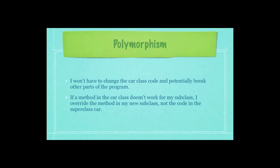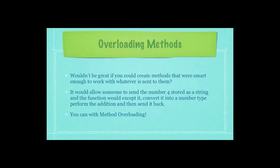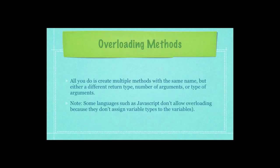If a method in the car class doesn't work for my subclass, I override the method in my new subclass, not the code in the superclass car. With method overloading, you create multiple methods with the same name but either a different return type, different number of arguments, or type of arguments. Note that some languages such as JavaScript don't allow overloading because they don't assign variable types to variables. But if you're using an object-oriented language that does assign variable types — such as integer, double, or float — this most definitely works.